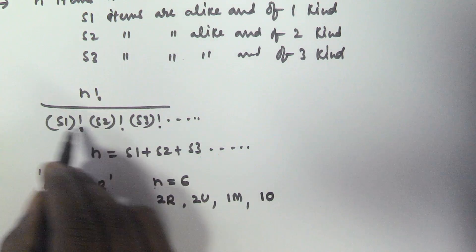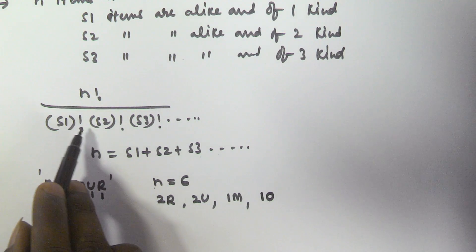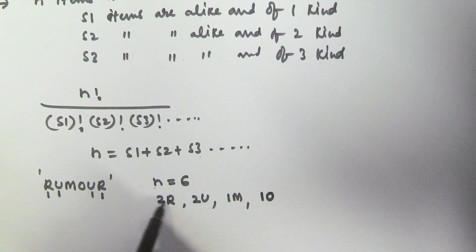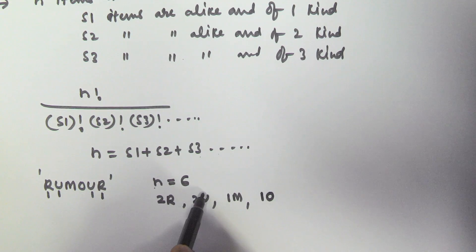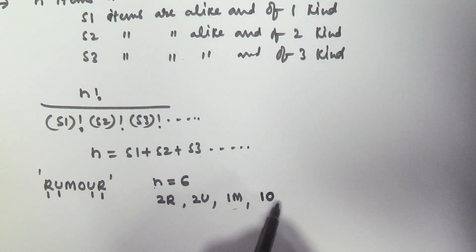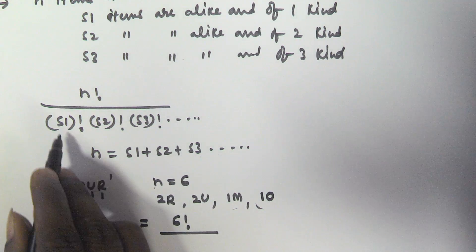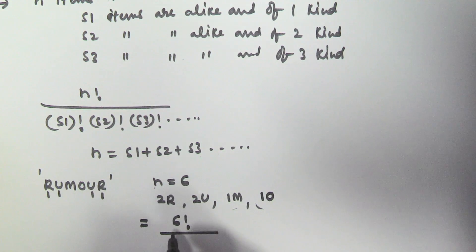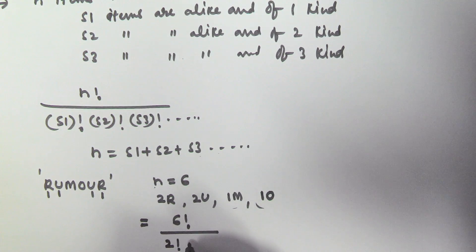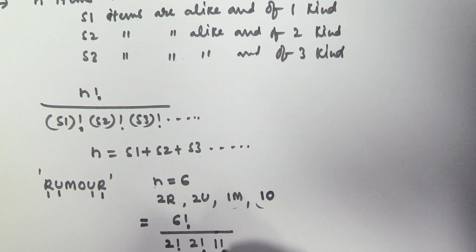According to this formula, there are N items, out of which two R's are alike, two U's are there, one M, and one O. So the number of permutations is given by N factorial — that is six factorial — divided by: two R's alike gives two factorial, two U's gives two factorial, one M gives one factorial, and one O gives one factorial.